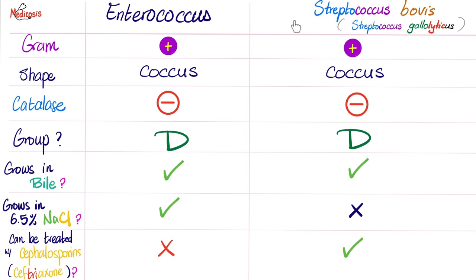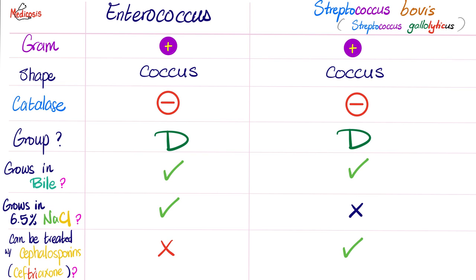And now to the comparison table. Both of them are gram-positive cocci, catalase-negative, group D. Both of them grow in bile, but only Enterococcus can survive salt solutions — Streptococcus bovis cannot. If you add salt to the culture medium, you will kill Streptococcus bovis, but you will never kill Enterococcus with salt — at least with a 6.5% solution.